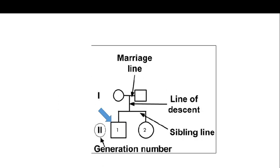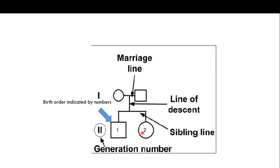Other important lines in a pedigree: the horizontal line between a couple is the marriage line; the vertical line descending from it is the line of descent; and the horizontal lines connecting offspring are sibling lines. Numbers indicate birth order — for example, 1 and 2 indicate the first and second birth for a particular couple.